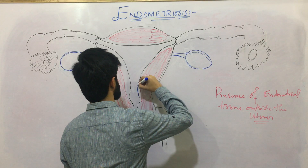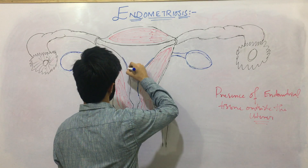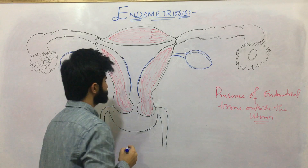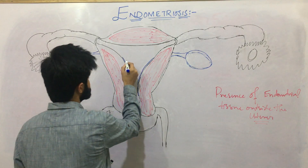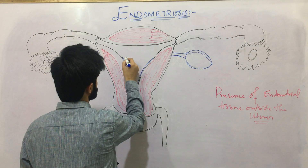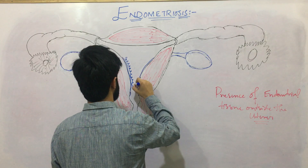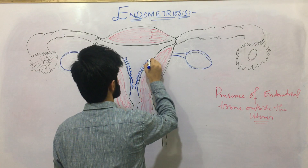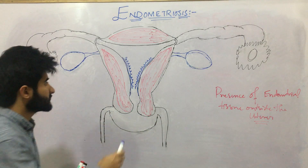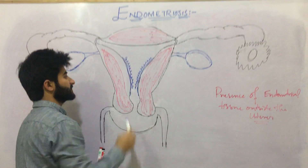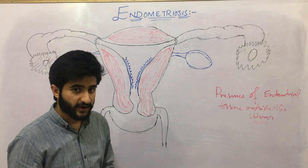Normally, our endometrium is present in the uterus and it is composed of two layers. One is the basal layer, which does not shed during menstruation. The other layer is the functional layer, which is shed during menstruation.